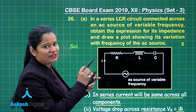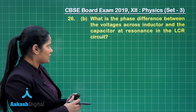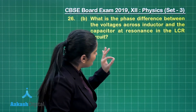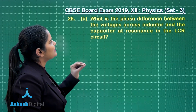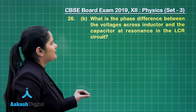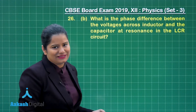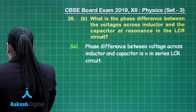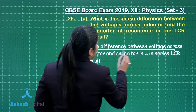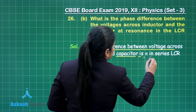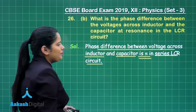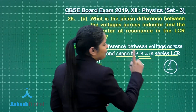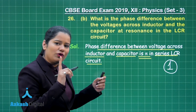Now let us move on to Part B of the same choice of question. Part B asks: what is the phase difference between the voltage across the inductor and capacitor at resonance in an LCR circuit? The answer is π. You need to write in one line that the phase difference between the voltage across the inductor and capacitor is π in a series LCR circuit, and for writing this you get one mark.